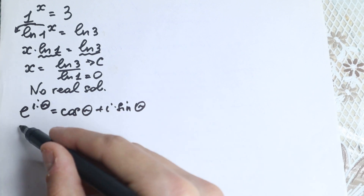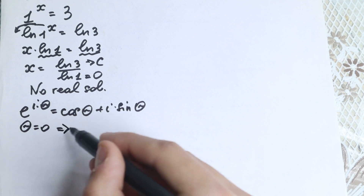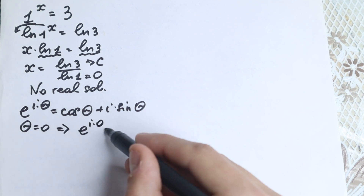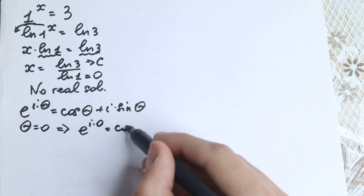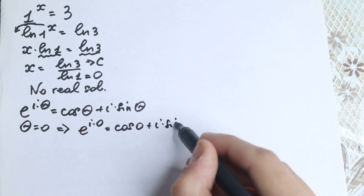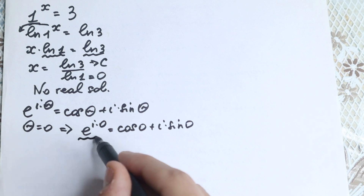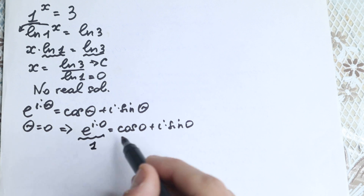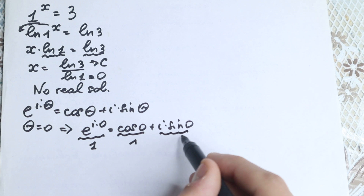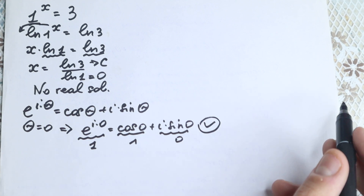Let's check this identity quickly. If theta equals 0, we have e to the power i times 0 equals cosine 0 plus i sine 0, which is absolutely correct. Cosine 0 equals 1, sine 0 equals 0, so we get 1 equals 1. Euler's identity checks out.